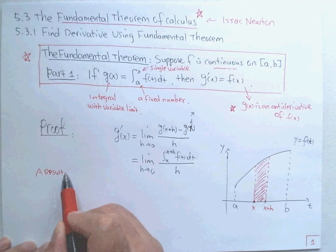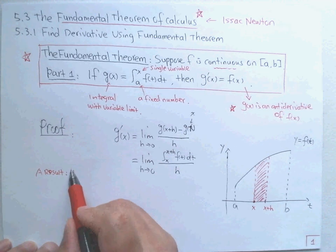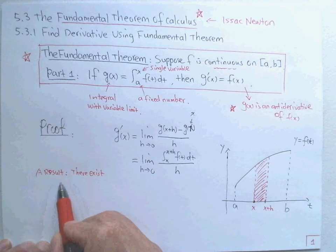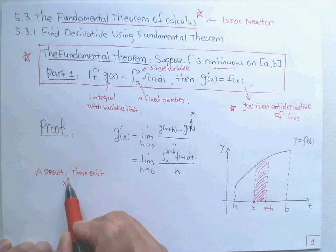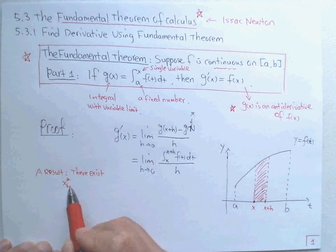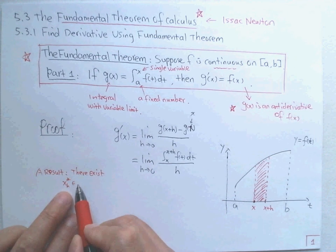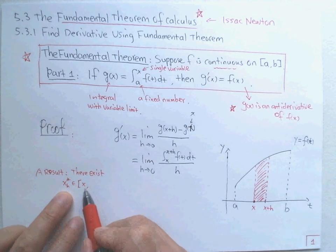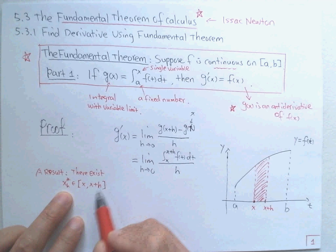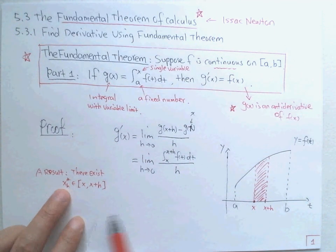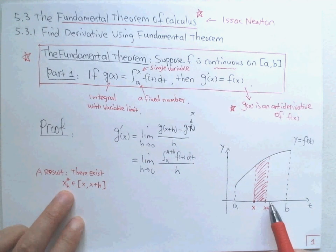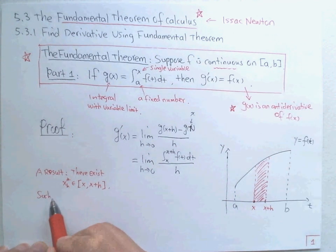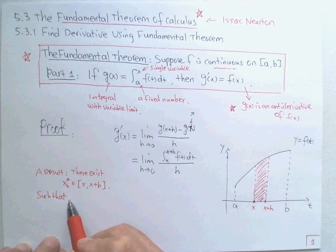We need to use this result: there exists a point x* (which depends on h) between the interval from x to x + h. This point depends on h — if h moves, this point will move. There exists such a point.